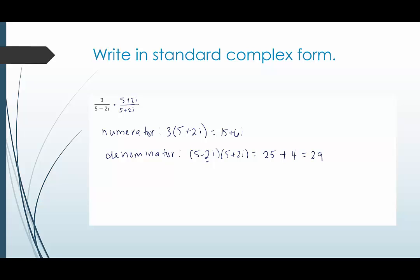If you don't believe me you can always distribute and multiply through. But ultimately you should end up with c squared plus d squared every single time. So what is this going to look like? This is going to look like 15 plus 6i over 29.